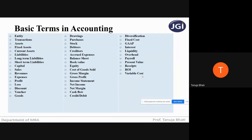Next, what is the meaning of variable cost? Variable cost is the opposite of fixed cost. Variable cost is a cost or expense which keeps on varying and changing with the change in the level of sales volume. If sales increase, variable cost increases; if sales decrease, variable cost decreases. So variable cost has a direct relationship with sales.